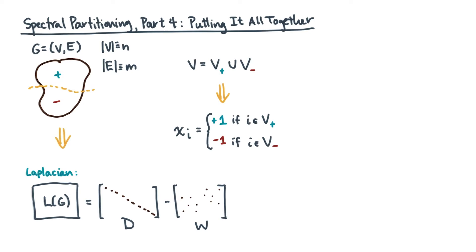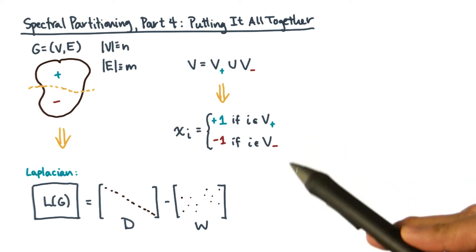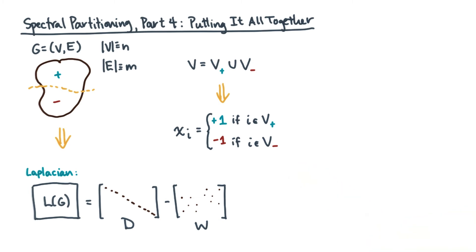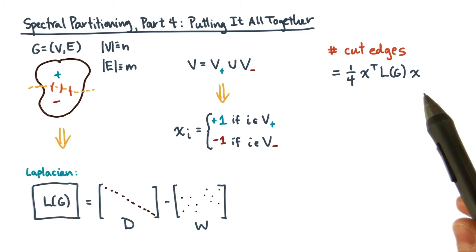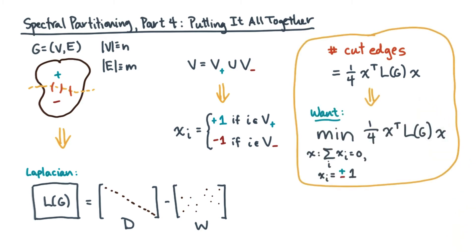Each vertex i is assigned to one partition or the other, designated by a plus one or a minus one. Now suppose you want to know the number of cut edges in G. Then you can count it algebraically. That suggests that partitioning could be viewed as choosing an x to minimize this quantity. So this becomes a combinatorial optimization problem. Formally, we want an x that minimizes the number of cut edges subject to two conditions.